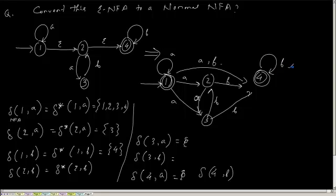This is the newly created NFA from the given epsilon-NFA. This completes the chapter on non-deterministic finite automata. In the next class we will start a new chapter on regular expressions and the concept of grammar. The topic of minimization of DFA will be covered after regular expressions and grammar.